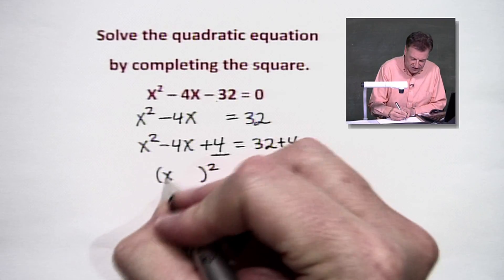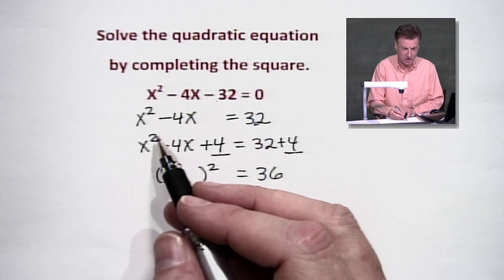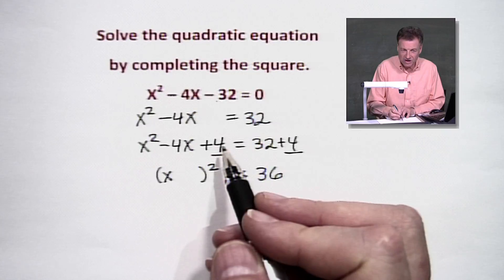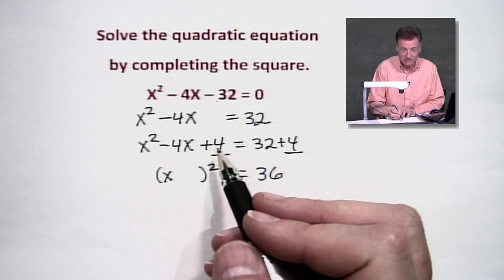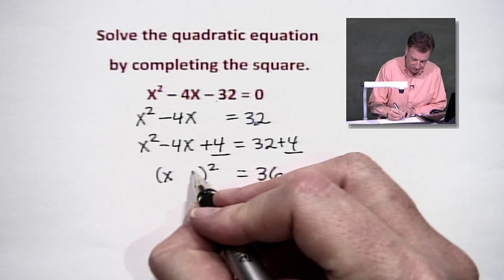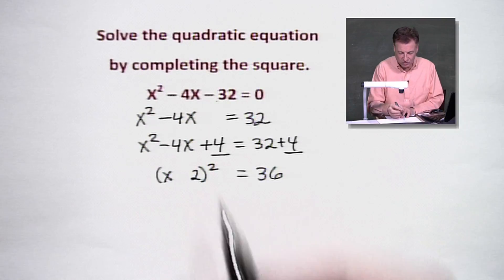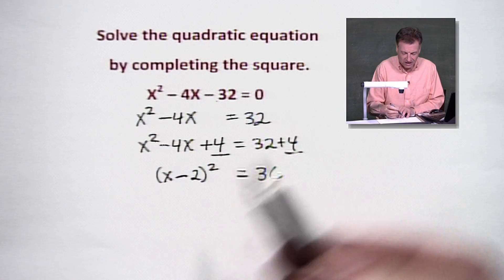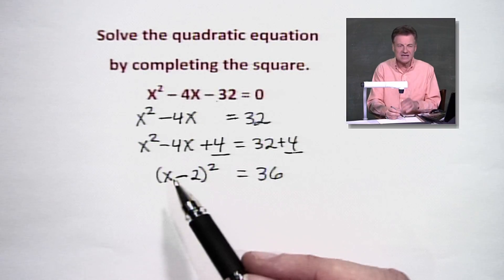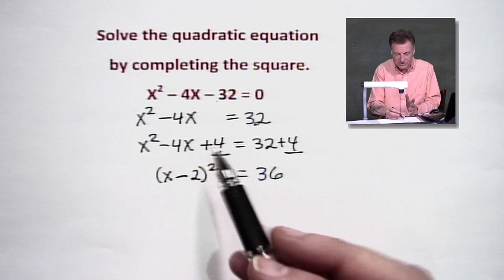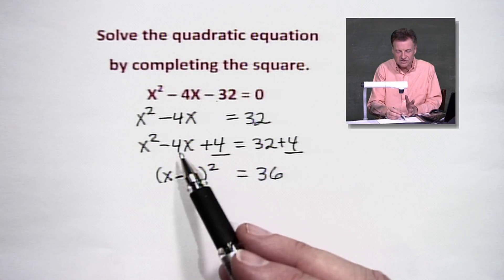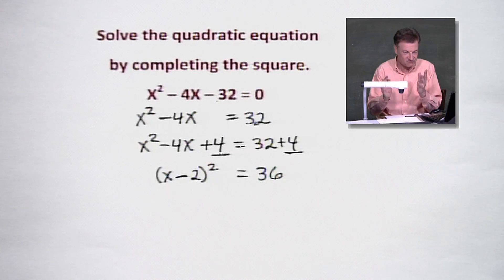And folks, we know we've got to have x and x on the front end because that's how we get x squared. And if we've got a perfect square, we're going to have to use 2 and 2 back here. And what's the sign in between? We've got to get a minus 4 in the middle. So what we're saying basically is if we were to take x minus 2 times x minus 2, we would get x squared minus 4x plus 4. That's the deal.